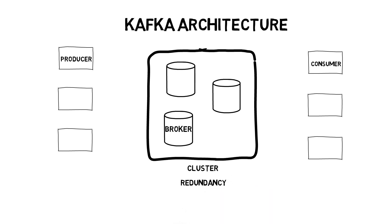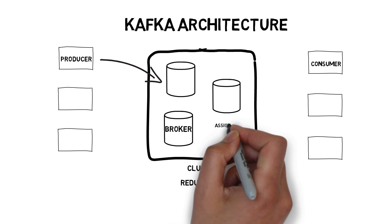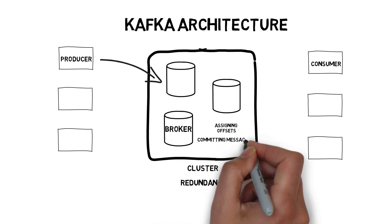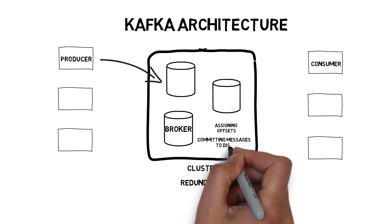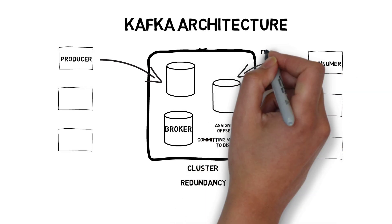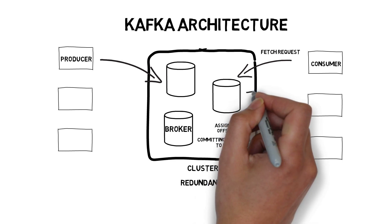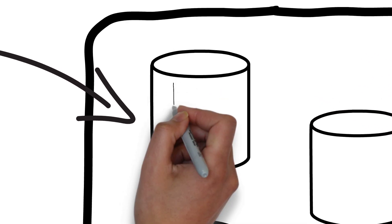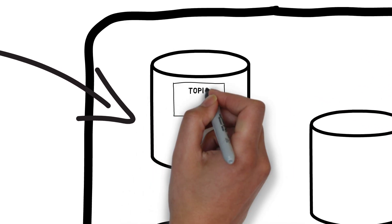The broker is responsible for receiving messages from producers, assigning offsets, and committing messages to disk. It is also responsible for responding to consumers' fetch requests and serving messages. In Kafka, when messages are sent to a broker, they are sent to a particular topic.